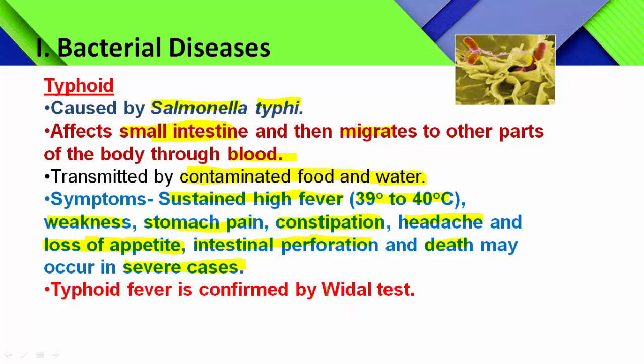You need to remember for a one-mark question: the test for the identification or detection of typhoid is the Widal test. To summarize typhoid: causal organism is Salmonella typhi, a bacterium; organ infected is the small intestine; symptoms include sustained high fever, weakness, stomach pain, constipation, headache, loss of appetite, intestinal perforation in severe infection, and death may also occur.